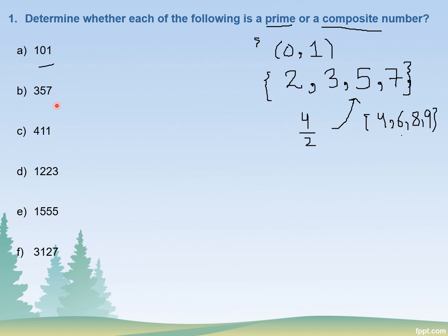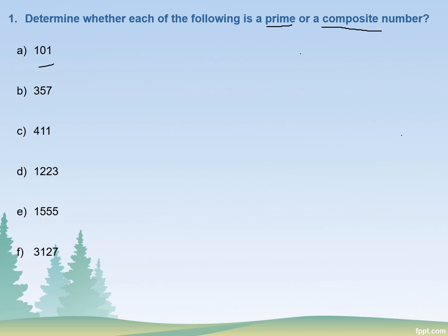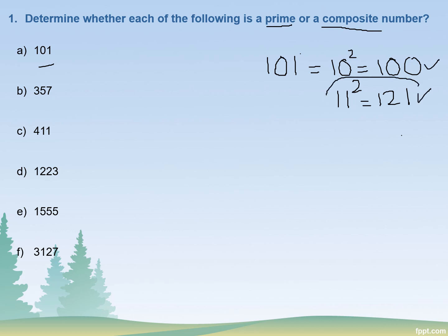Let's try the first number, 101. See which perfect square is nearest to 101. 10 squared is 100, and 11 squared is 121. It's better to take the number just greater than 101, so we consider 11 squared which is 121. Now look for the prime numbers that are less than 11.